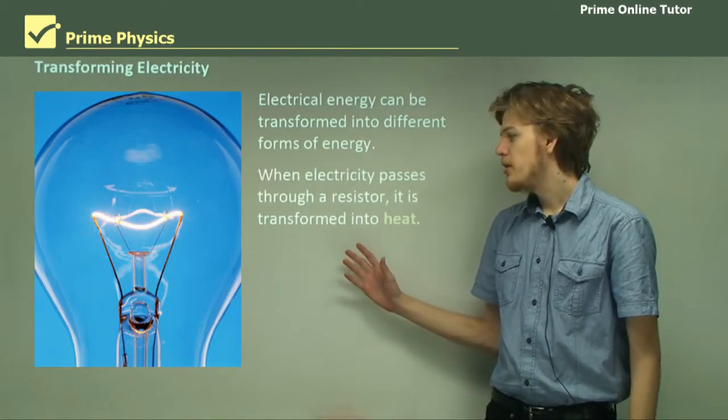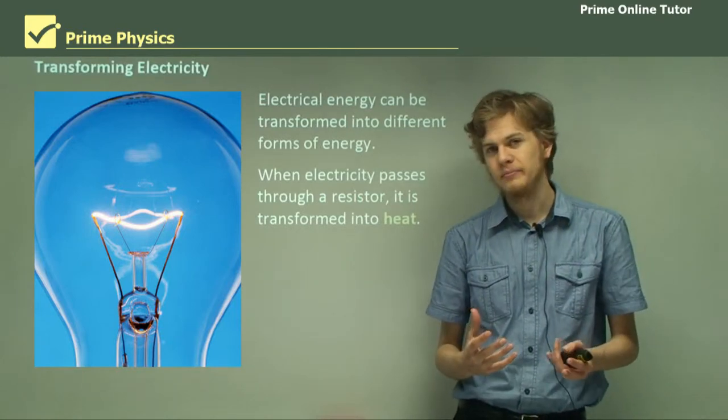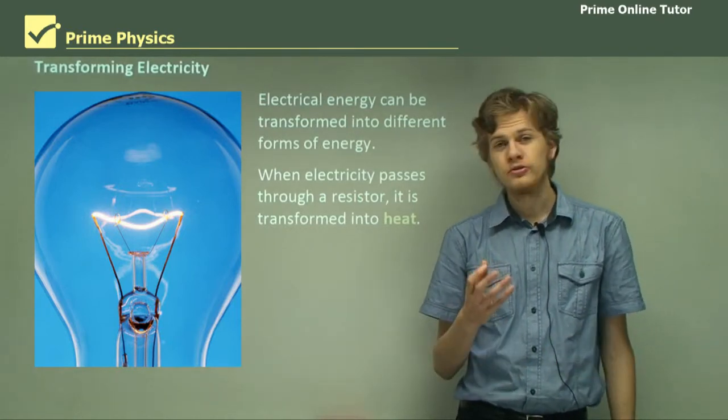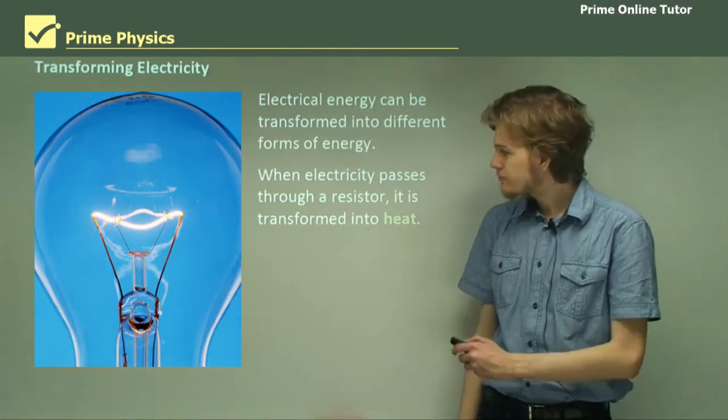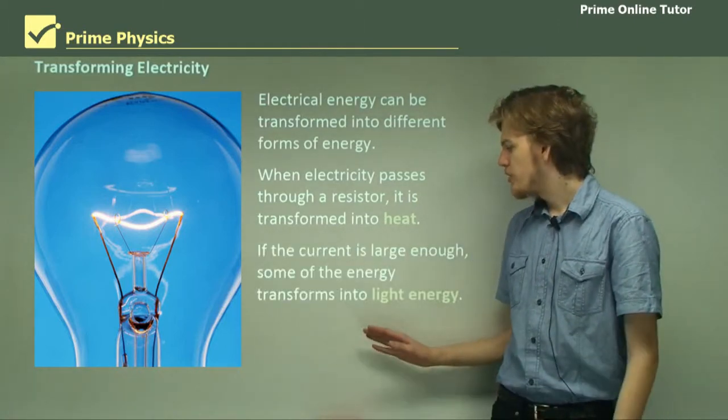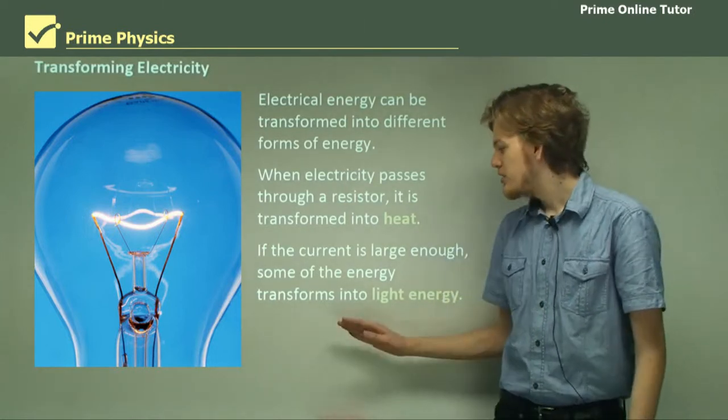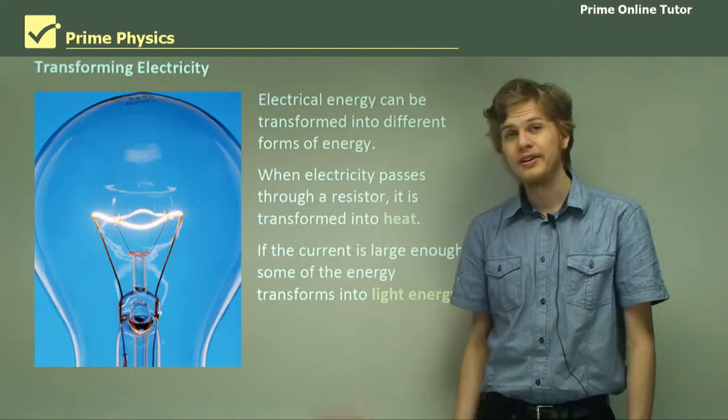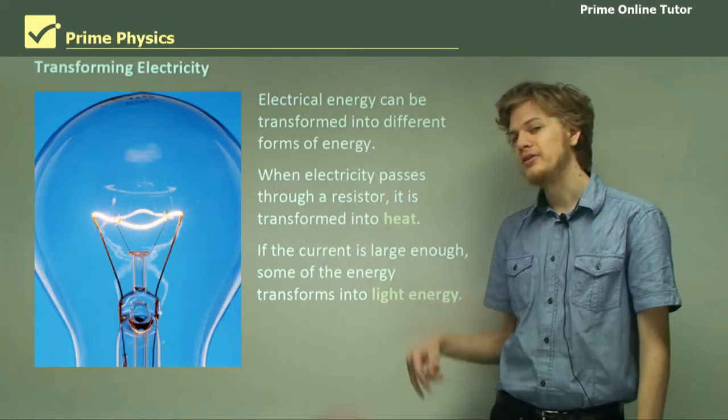When electricity passes through a resistor, it is transformed into heat by that resistor. So it's a transformation of electrical energy into heat energy. So if the current is large enough, like an incandescent light bulb, then some of the energy will even transform into light energy, although more still will be transformed into heat energy.